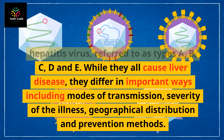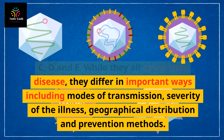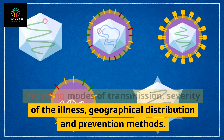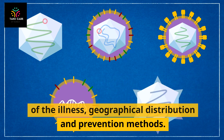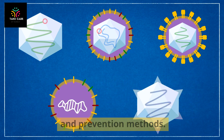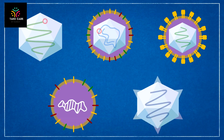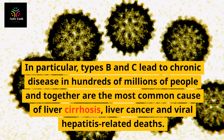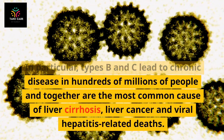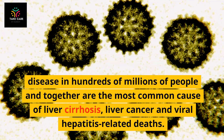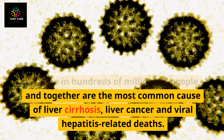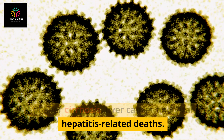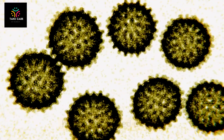While they all cause liver disease, they differ in important ways including modes of transmission, severity of the illness, geographical distribution and prevention methods. In particular, types B and C lead to chronic disease in hundreds of millions of people and together are the most common cause of liver cirrhosis, liver cancer and viral hepatitis-related deaths.